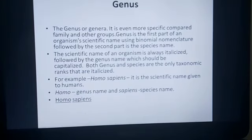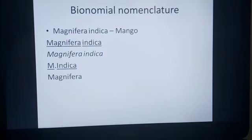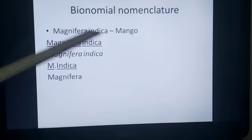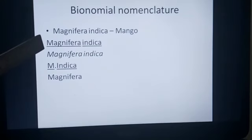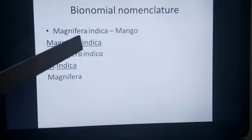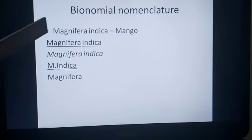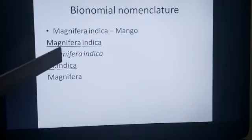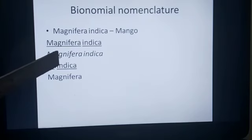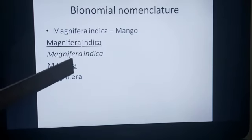Another example of binomial nomenclature is Mangifera indica, the name of mango. When writing by hand, write Mangifera with a capital M and indica with a lowercase i, underlined separately. In printed text, write in italics — M. indica. If you don't remember the genus name, you can abbreviate it to the first letter. If you cannot recall the species, you may write only Mangifera and omit 'indica' — that is also acceptable.